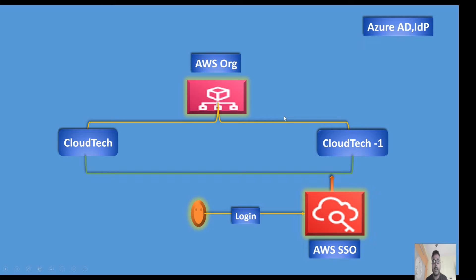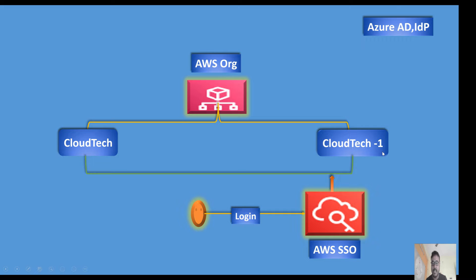Today our agenda is about AWS Organizations. Inside AWS Organizations, if you have multiple accounts, how we can access them using SSO - that's our today's agenda. In a subsequent video I will talk about integrating SSO with an external IdP like Azure AD, Keycloak, or any other external identity provider. Today's focus is: inside AWS Organizations, if you have multiple accounts - suppose cloud-tech and cloud-tech-one - how we can access these two accounts using SSO.